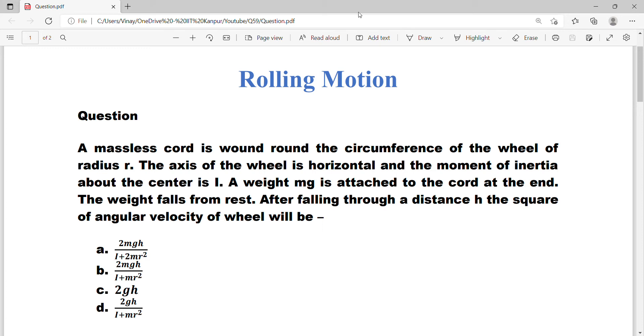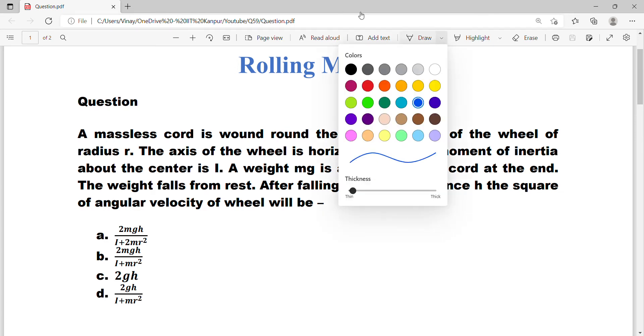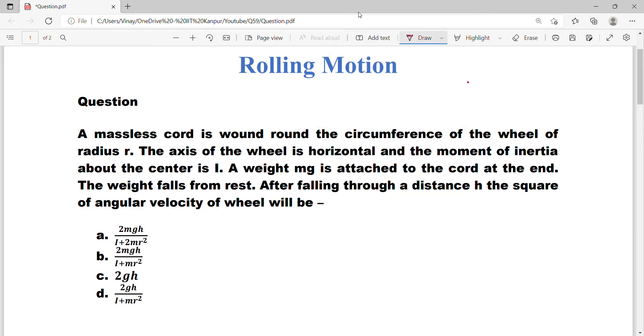For example, this question was asked by one of my students. Let's just do this question. Let me read the question for you. A massless cord is wound round the circumference of the wheel of radius r. The axis of the wheel is horizontal and the moment of inertia about the center is I.